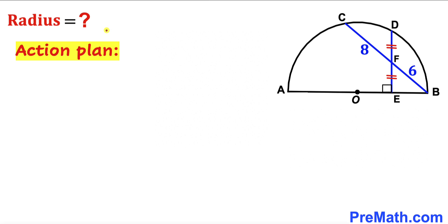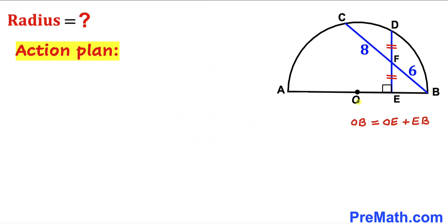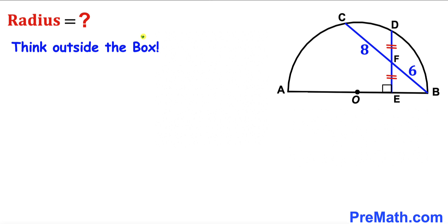Since we are interested in calculating the radius of this semicircle, we can see that OB is the radius of this semicircle. Moreover, OB equals the sum of two individual lengths: OE and EB. So our task is to find the length OE and the length EB. Now let's think outside the box.